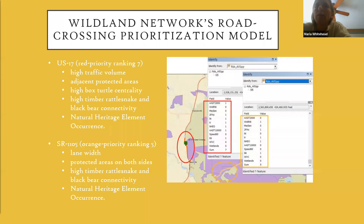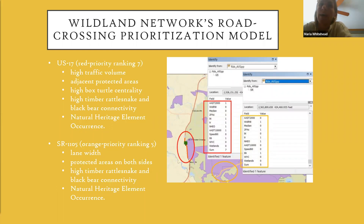Two example prioritized road crossing sites illustrate the data: the first is a high-traffic area with adjacent protected lands on one side, high box turtle centrality, high timber rattlesnake movement potential, black bear connectivity, and natural heritage element occurrences for rare and threatened species. The second modeled priority area showed an appropriate lane width for movement, protected areas on both sides of the road, high timber rattlesnake and black bear connectivity, and natural heritage element occurrences for rare and threatened species.